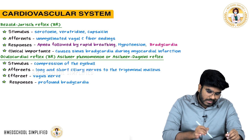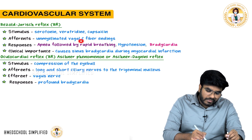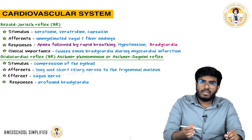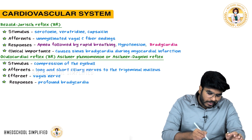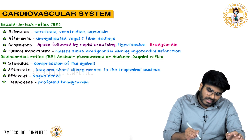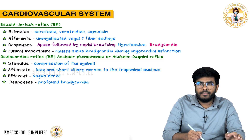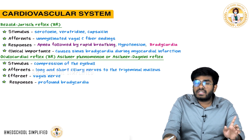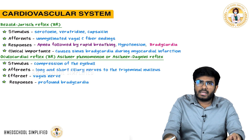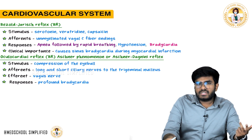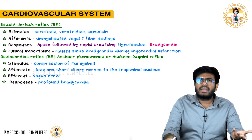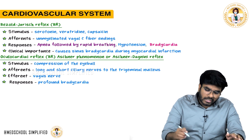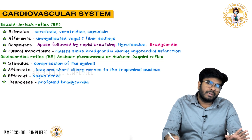When these chemicals are introduced into the heart, the information travels via unmyelinated vagal C fibers — this is an MCQ point. The CNS understands something is wrong with the heart. The response is bradycardia. Additionally, the patient will have apnea followed by rapid breathing and decreased BP. Parasympathetic activity increases, causing hypotension, bradycardia, and apnea followed by rapid breathing.